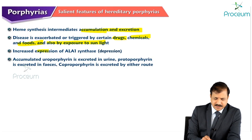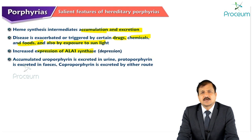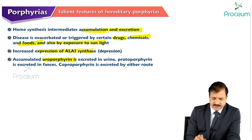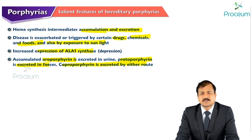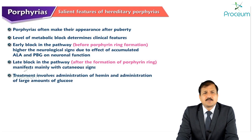A third salient feature of hereditary porphyria is increased expression of ALA synthase by de-repression. The fourth point is that accumulated uroporphyrin is excreted in the urine, protoporphyrin is excreted in the feces, and coproporphyrin is excreted by either route. These are the salient features of hereditary porphyrias.